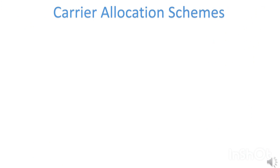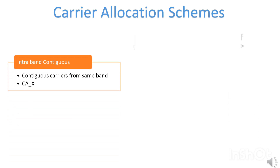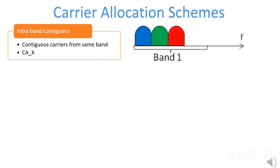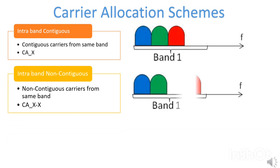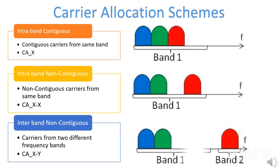There are various ways in which CA carriers can be accommodated. First is intra-band contiguous, where the primary component carrier and secondary component carriers are contiguous and belong to the same band. As spectrum allocation to operators is not always uniform, it is not always possible to have this scheme. Next is intra-band non-contiguous, where the primary and secondary component carriers are allocated from the same band but are not contiguous. The third is inter-band non-contiguous, where the primary and secondary component carriers are allocated from two different frequency bands. This scheme allows a number of possible band combinations, and 3GPP has defined all the allowed band combinations for carrier aggregation.